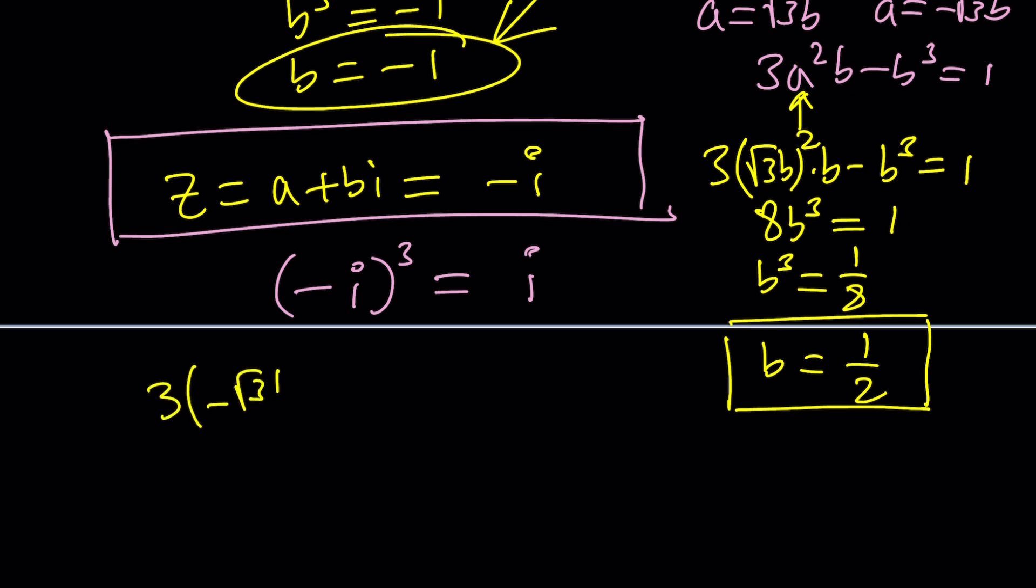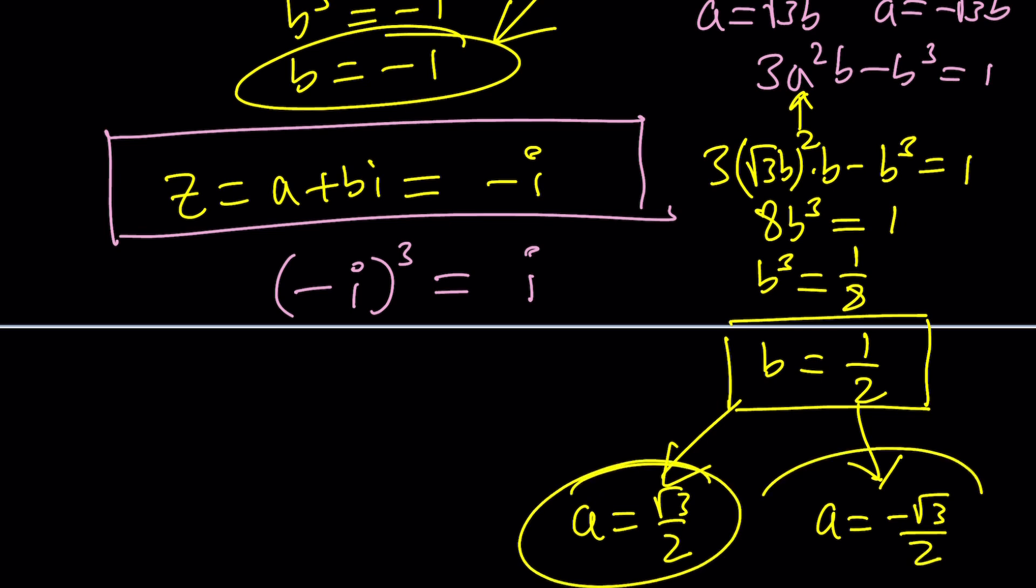3 times -√3·b times b minus b³ = 1 again. This time, you're going to get 8b³ = 1 again. Wait a minute, that should not be the case. Oh, you know what? We haven't found the a values. That's why. So b is going to be fixed, but there's going to be two a values that come from here because a² is constant for both values. So a is √3·b, so a is going to be √3/2 or -√3/2. Great. And this means z = a + bi, so √3/2 + 1/2·i or z = -√3/2 + 1/2·i.